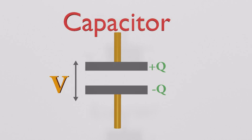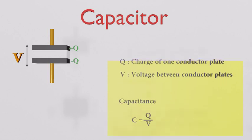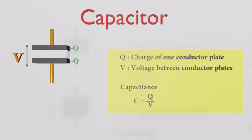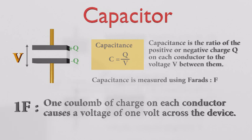One conductor plate has a negative charge Q and the other has a positive charge Q. Due to this charge difference, the capacitor's potential difference between the two plates is V. An ideal capacitor is characterized by a constant called capacitance, denoted by C. Capacitance is defined as C equals Q divided by V — it is the ratio of the positive or negative charge Q on each conductor to the voltage between them. Capacitance is measured in farads; a capacitance of one farad means that one coulomb of charge on each conductor causes a voltage of one volt across the device.